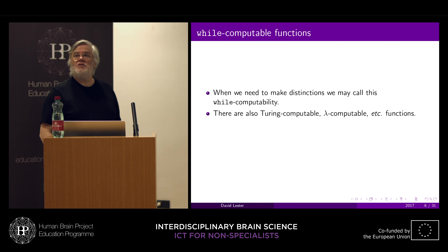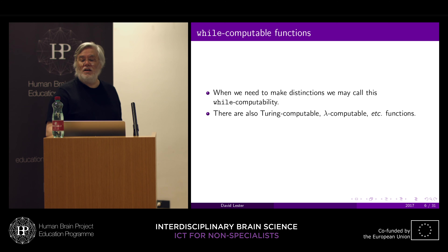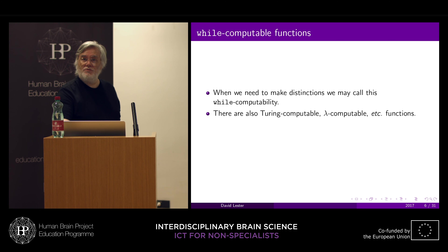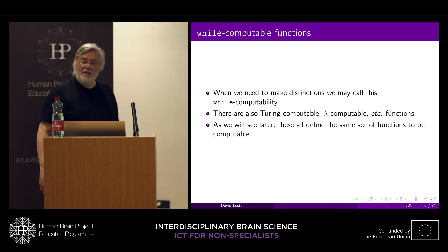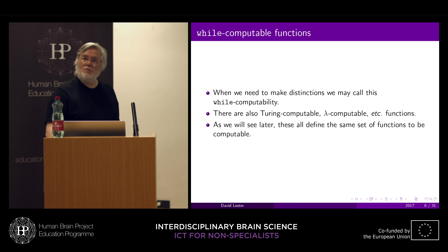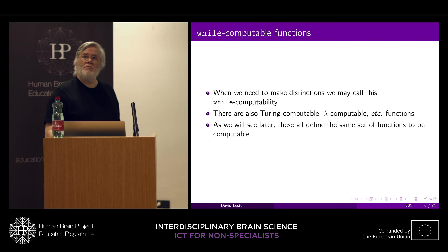There's also Turing computable, which describes computability in terms of Turing machines; lambda computable, which describes things in terms of lambda functions; and there are other things as well, such as recursive functions. As we'll see later, these all define the same set of functions to be computable. Despite multiple different ways of describing algorithmic computing engines, they end up describing exactly the same set of functions to be computable and the same set to be non-computable.